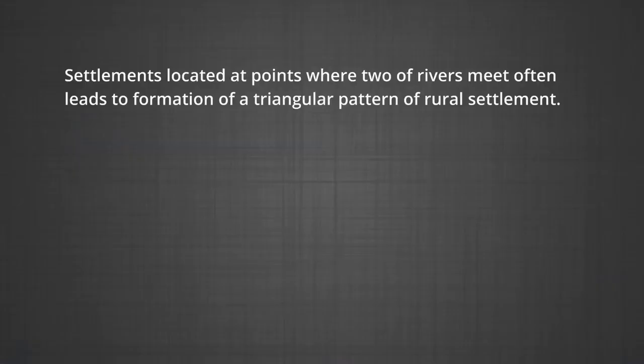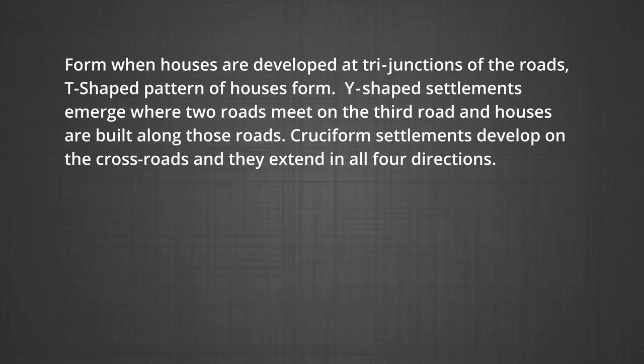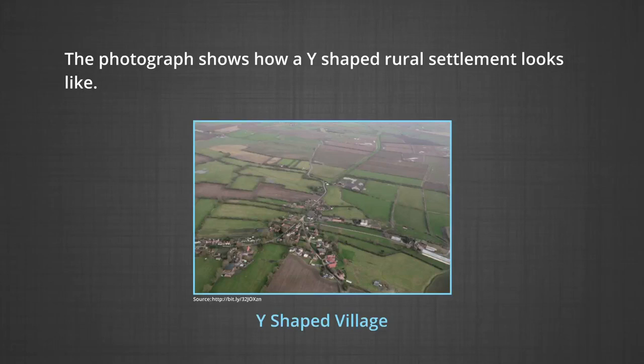Triangular pattern: settlements located at points where two rivers meet often lead to the formation of a triangular pattern. T-shaped, Y-shaped, and cross-shaped or cruciform settlements form when houses are developed at tri-junctions of roads. T-shaped pattern of houses forms at road junctions; Y-shaped settlements emerge where two roads meet a third road and houses are built along them; cruciform settlements develop on crossroads and extend in all four directions. Double village pattern: this kind of village forms where houses are built on both sides of a river where there is a bridge or ferry to cross over.